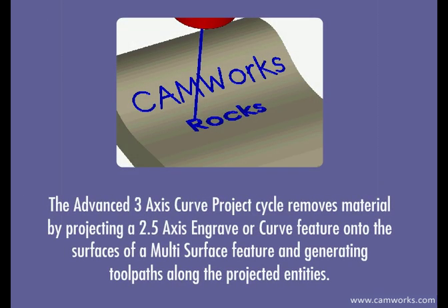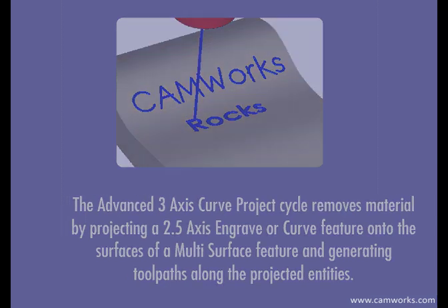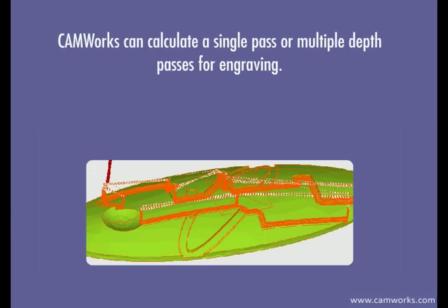The advanced three-axis curve project cycle removes material by projecting a 2.5-axis engrave or curve feature onto the surfaces of a multi-surface feature and generating toolpaths along the projected entities. CamWorks can calculate a single pass or multiple depth passes for engraving.